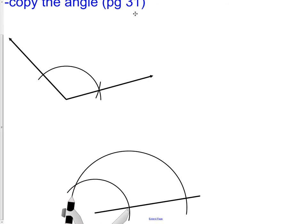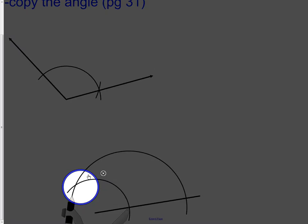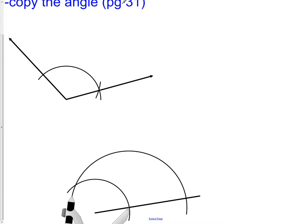All I care about is finding this location where my two arcs cross on my first picture. Now that I have that, I simply, starting at the vertex, I draw my ray through their intersection. I've now copied the angle. It'd be good to practice this because we're going to need this quite a bit in today's lesson and in tomorrow's lesson.